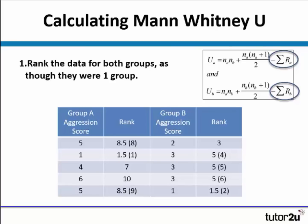This has been done for you already. Now, I want to look carefully at the table because the ranking process is quite complex. As you can see, we have two scores of one. They would respectively receive the ranks one and two. However, because they have the same score, they have to receive the same rank. The midpoint between one and two is 1.5, so instead of getting ranks one and two, they both get 1.5.